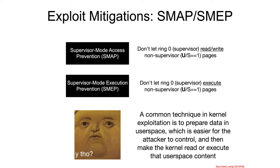Why would you ever want to stop the kernel from doing those things? The answer is that a common technique for exploiting the kernel is that an attacker prepares data or code in userspace, which they control and which is much easier to manipulate. They then trick the kernel through some vulnerability or bug to read from attacker-controlled data in userspace — which you'd prevent with access prevention — or execute some code in userspace. They literally stick code in userspace, exploit a bug to get RIP pointing at it, and the kernel ends up executing arbitrary code. That's what SMEP is for. Both SMEP and SMAP are trying to harden the kernel against userspace exploits.